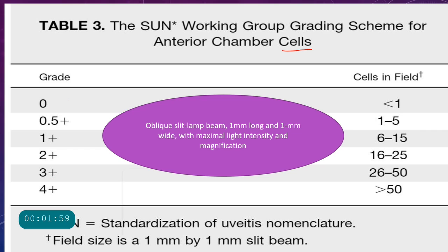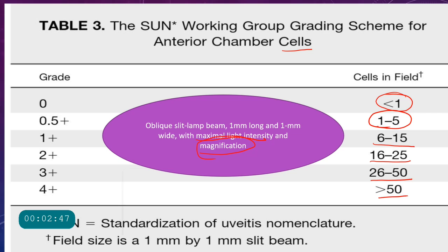The SUN working group has graded uveitis based on anterior chamber cells. Grade 0 means fewer than 1 cell in the field; 0.5+ means 1–5 cells; 1+ means 6–15 cells; 2+ means 16–25 cells; 3+ means 26–50 cells; and 4+ means more than 50 cells in a 1mm × 1mm slit beam at maximum light intensity.